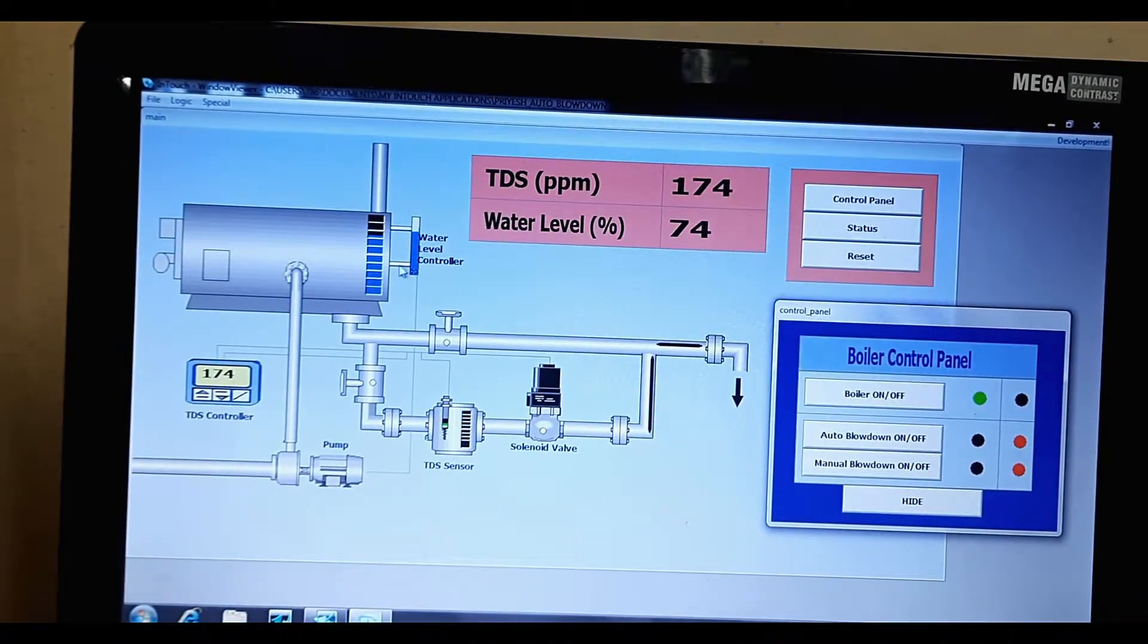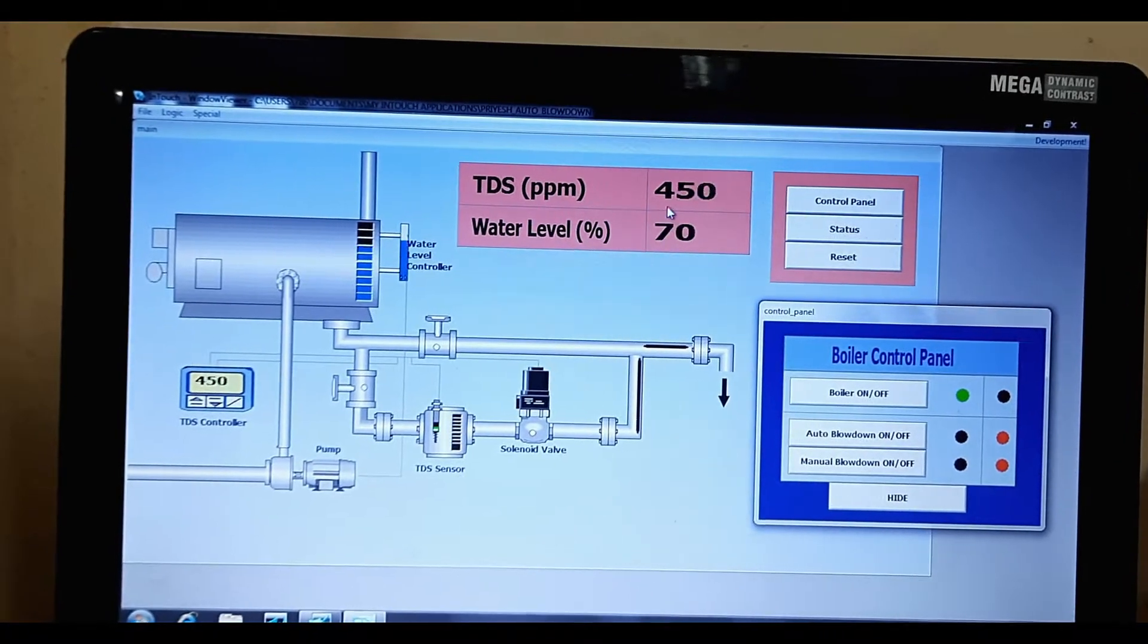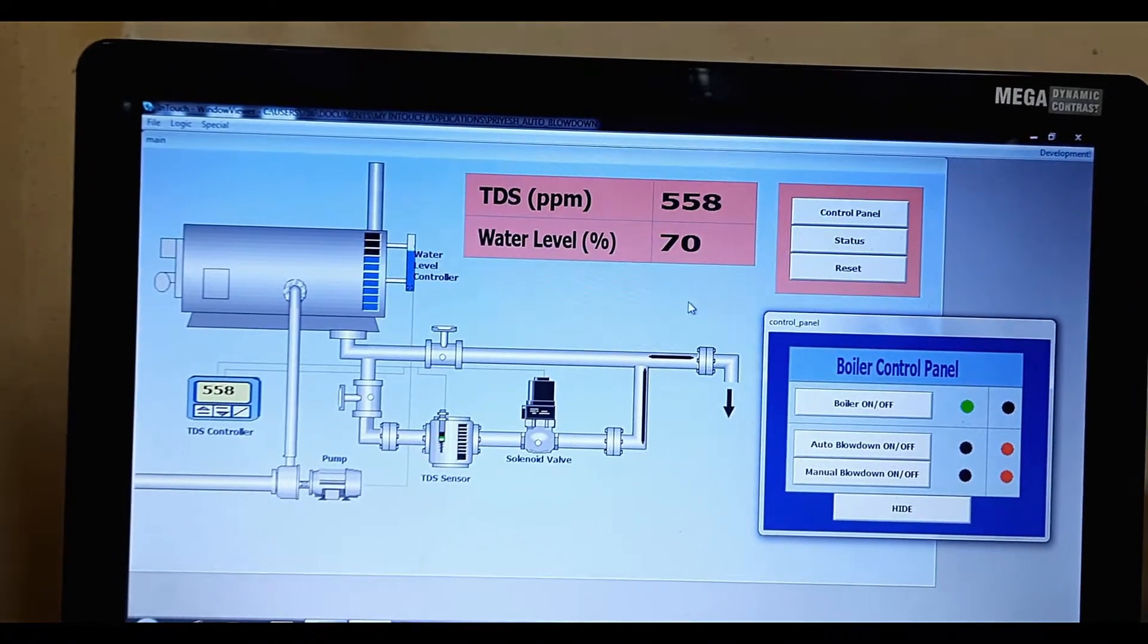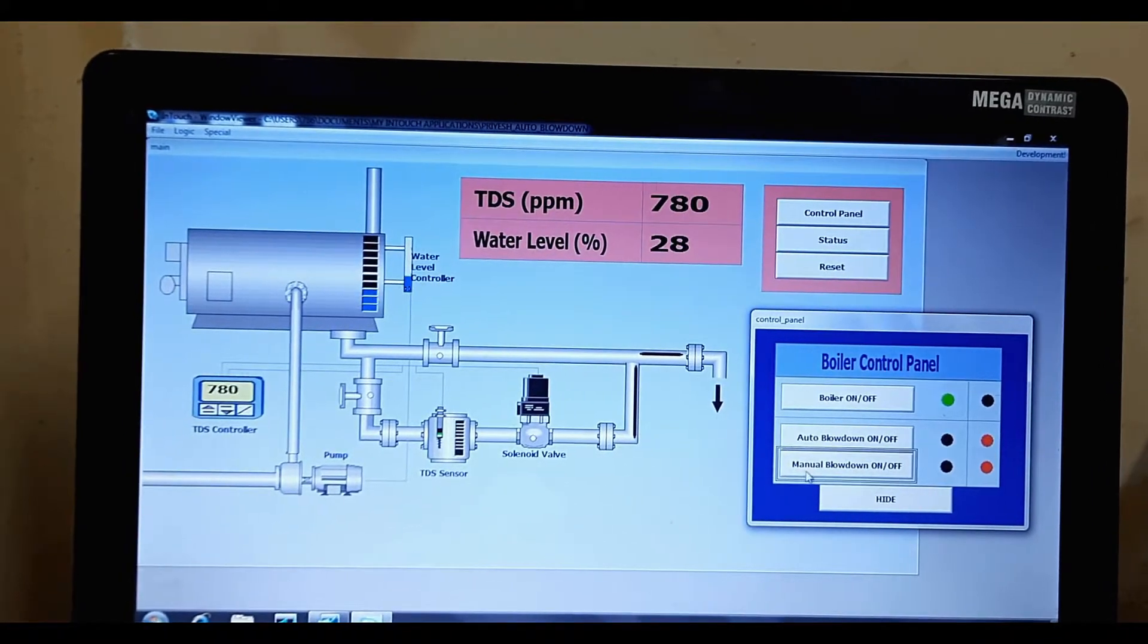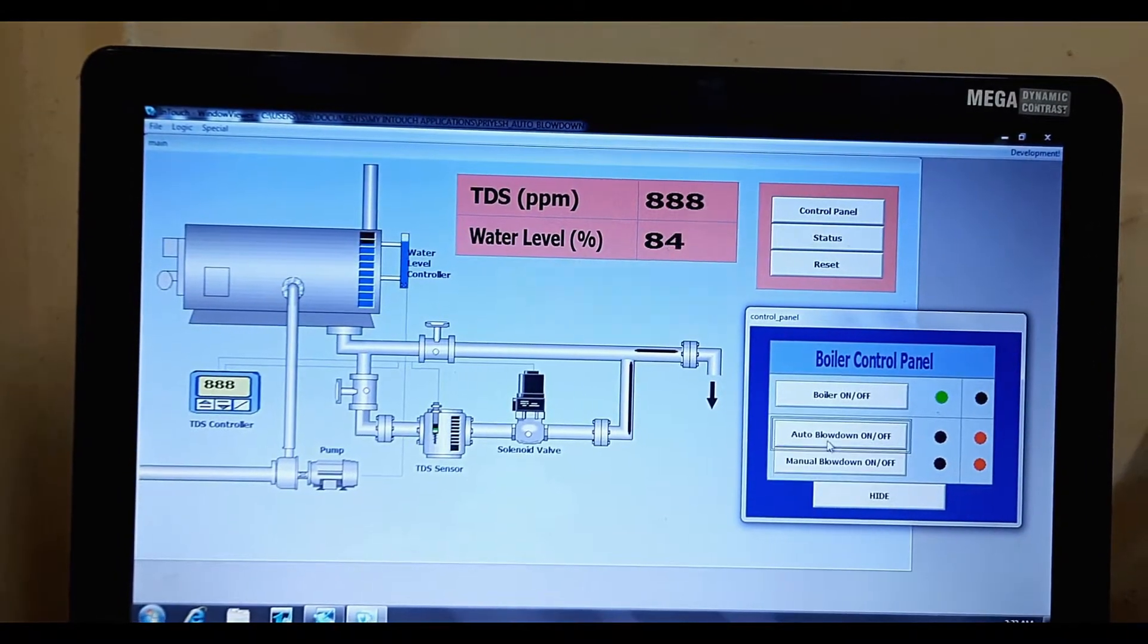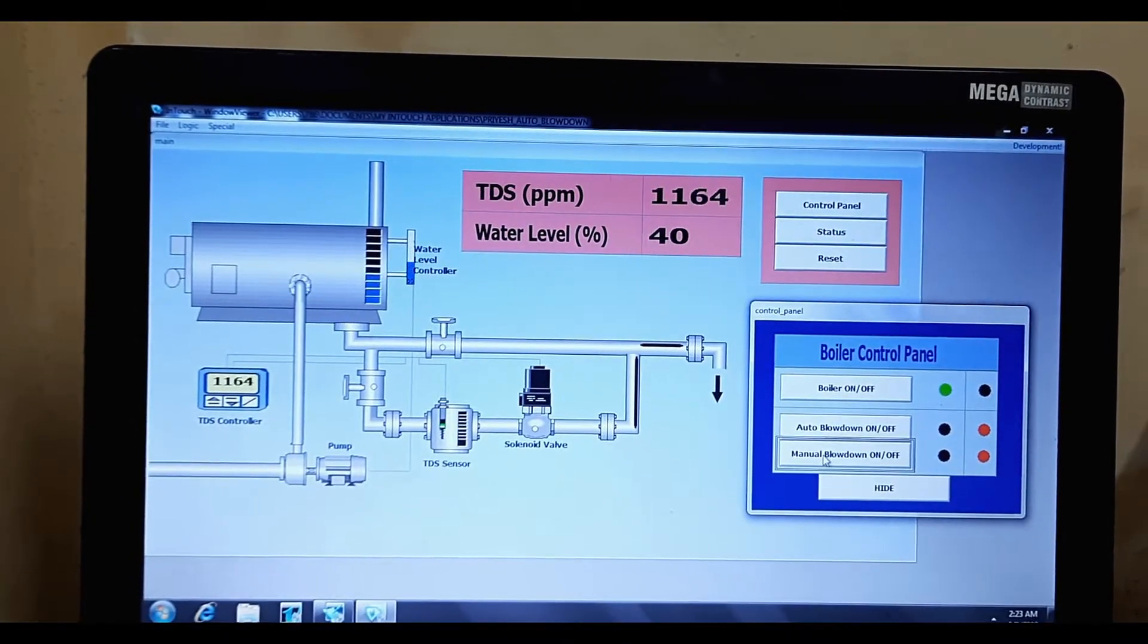So you can see that this is normal operation is going on here. Now as the boiler runs, the TDS increases, and to take care of this problem we have manual blowdown and automatic blowdown both.